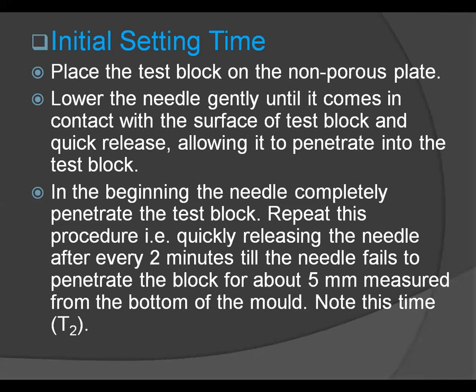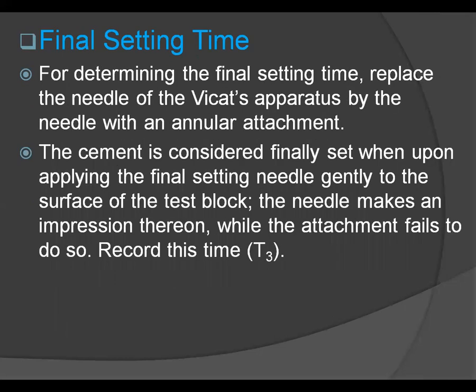This completes the initial setting time test. To carry out the final setting time test, replace the needle of the Vicat apparatus with the needle having an annular attachment. The cement is considered finally set when, upon applying the final setting needle gently to the surface of the test block, the needle makes an impression on it while the annular attachment fails to do so. Record this time as T3.